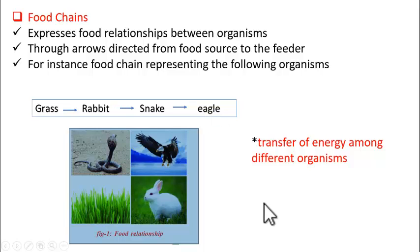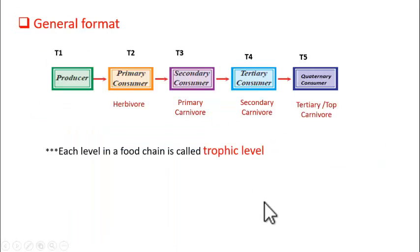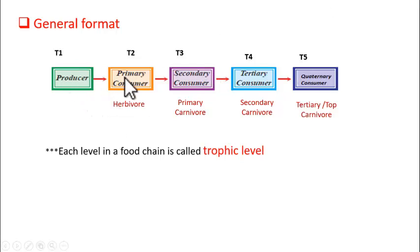Now let us see the general format of a food chain. Any food chain starts with a producer, followed by primary consumer, then secondary consumer, tertiary consumer, and quaternary consumer.